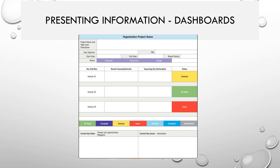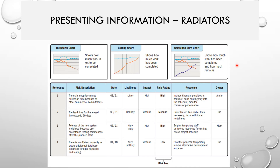The next function of the measurement performance domain is how to present the information. There are a number of ways. Most organizations follow a dashboard approach — one example shows all activities as green, yellow, or red. It includes high-level project information such as executive sponsor, start and end dates, current risks, and key issues. It's a simple dashboard showing how the project is progressing compared to baseline.